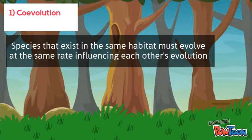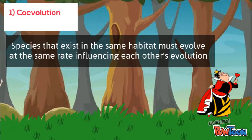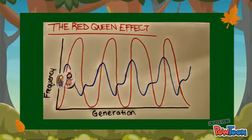Co-evolution: species that exist in the same habitats must evolve at the same rate, influencing each other's evolution. This cycle repeats, resulting in a constant rate of reciprocal evolution or extinction over millions of years.